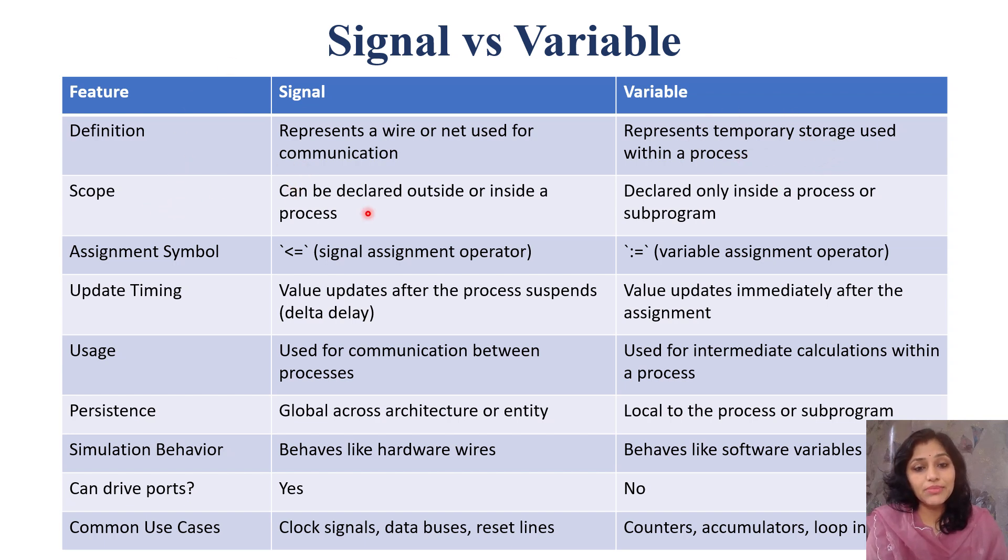Scope: signals can be declared outside or inside a process. Their scope is wide as compared to variables, whereas variables are declared in processes or sub-programs.